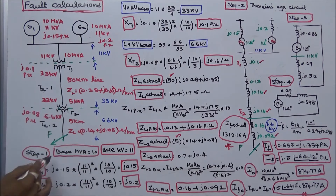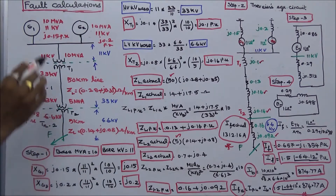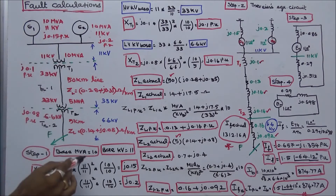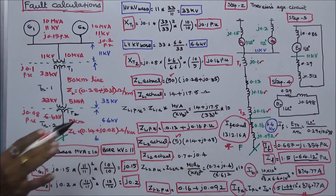The first step is to choose the base MVA and base kV. Base MVA is equal to 10, and base kV is equal to 11.